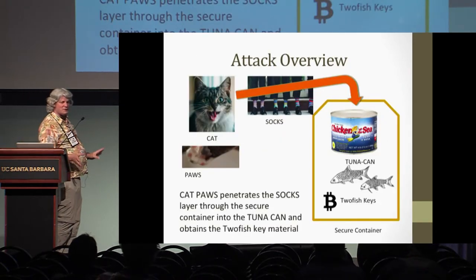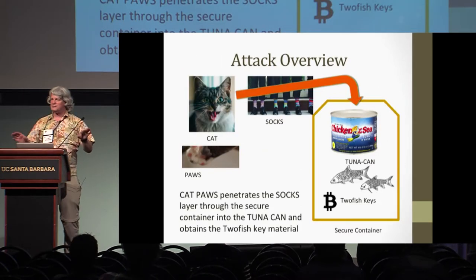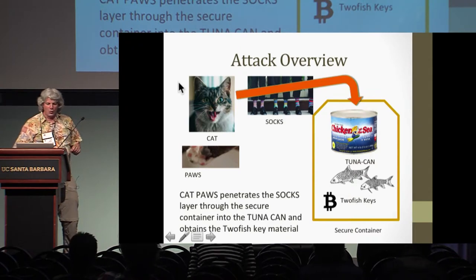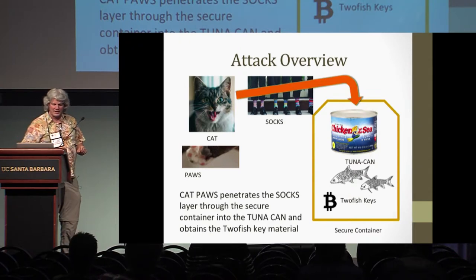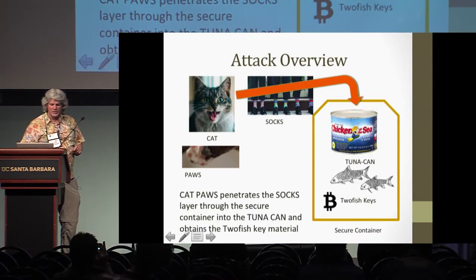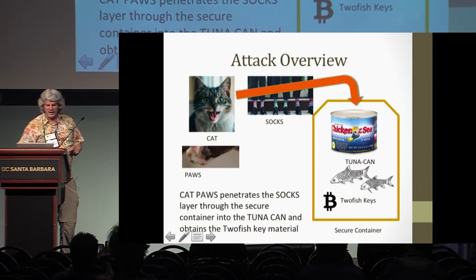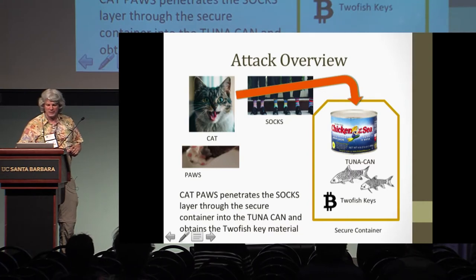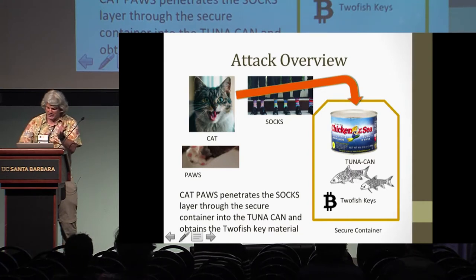Here is a graphical overview. I know it's been a long day — I wanted to make it very clear for you. We are demonstrating that the CATPAUSE are able to penetrate the SOX layer through the secure container into the tuna can and obtain the two fish key material, because it says blockchain again.